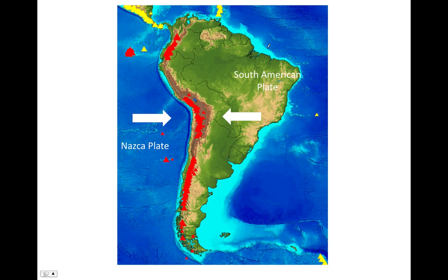I also want to note that the east coast of South America is not a plate boundary. Sometimes people think every edge of a continent is a tectonic plate boundary — that is not the case. The oceanic and continental lithosphere on either side of South America are one continuous plate, the South American plate. Tectonic plates can include different types of lithosphere.